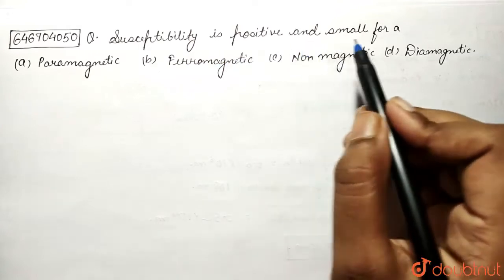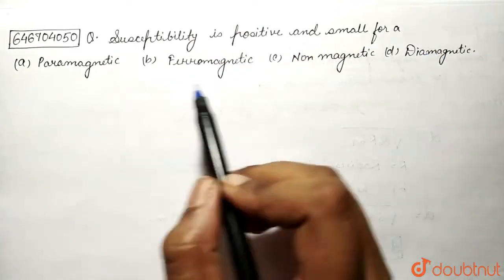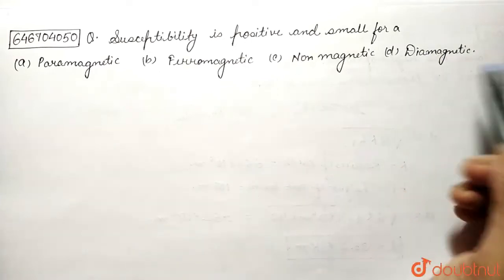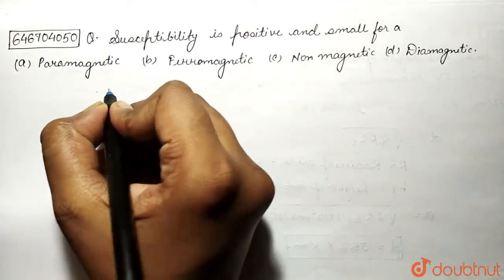is positive and small for, and the options are paramagnetic, ferromagnetic, non-magnetic, or diamagnetic materials. Okay, now if you see